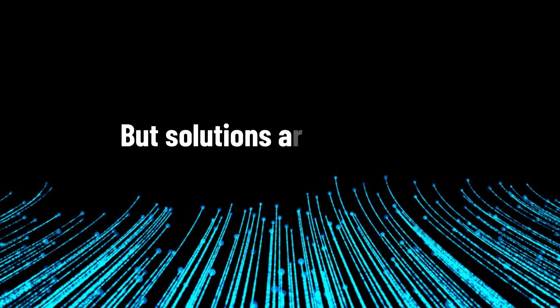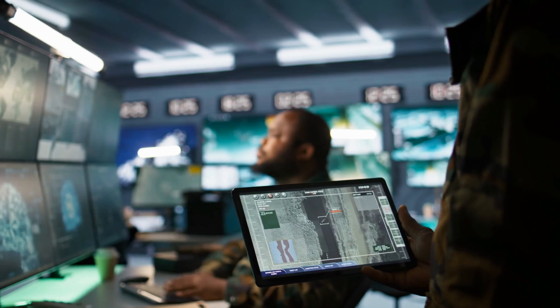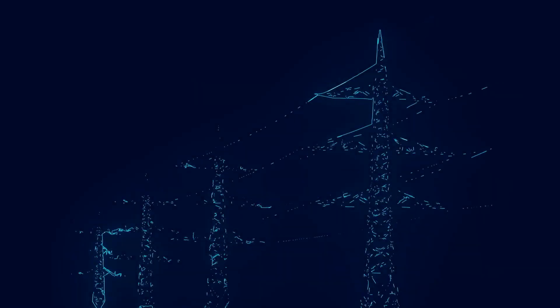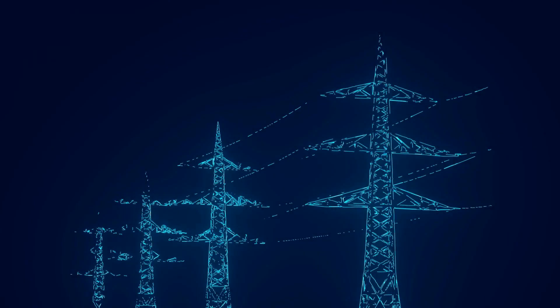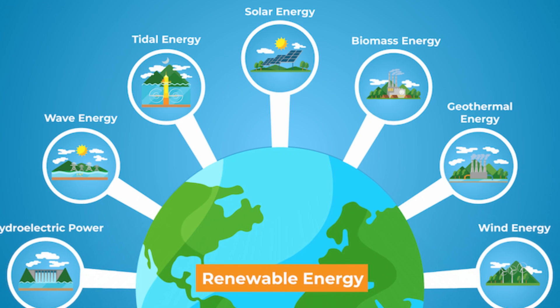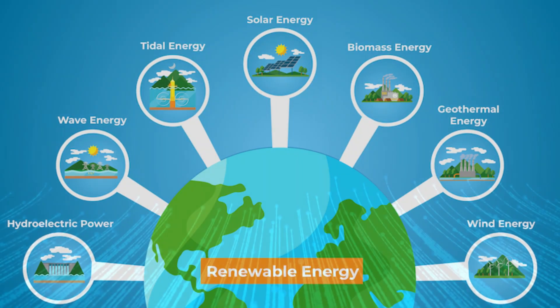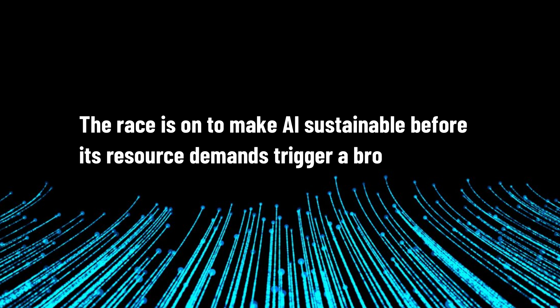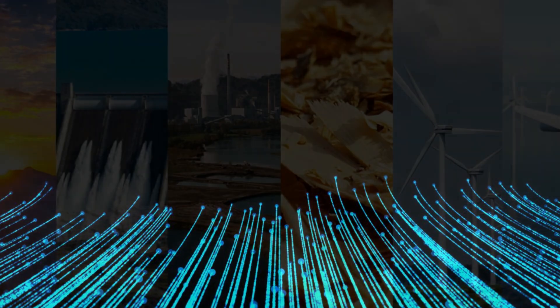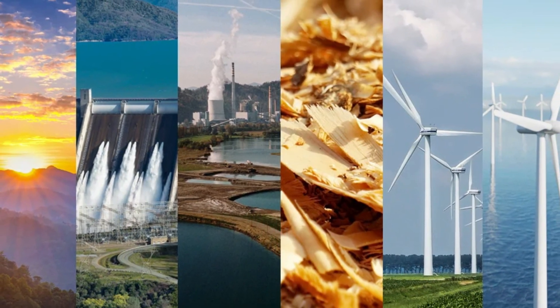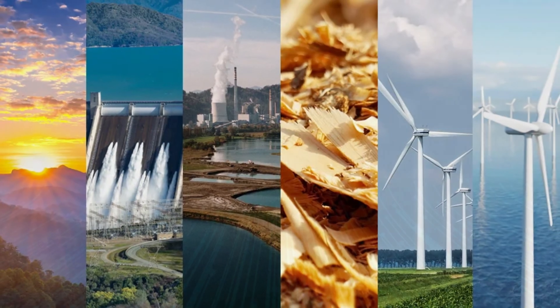But solutions are emerging. Some companies are developing more efficient AI algorithms that use 20 to 30% less energy. Others are transitioning to renewable energy sources and implementing water recycling systems. The race is on to make AI sustainable before its resource demands trigger a broader crisis. And while resource demands skyrocket, AI has identified another critical threat to global stability.